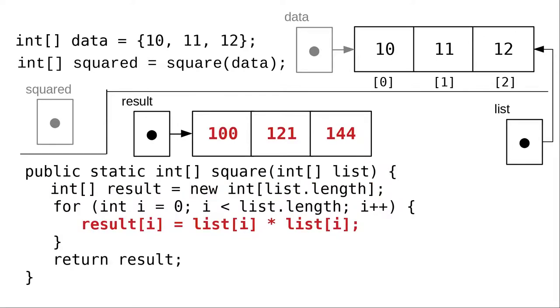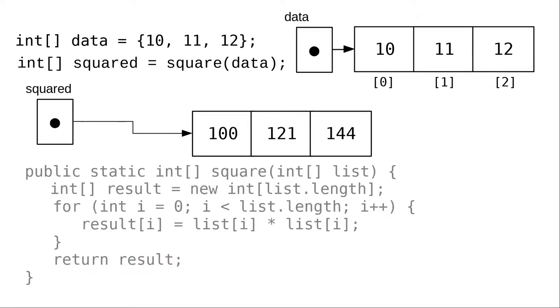And our loop assigns values to the new array. When we return the result, the reference to the result array is assigned to squared. And we now have a separate array with the squared numbers, leaving our original array untouched.